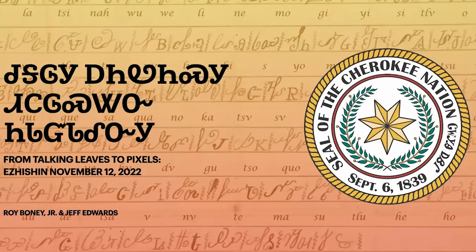We'll go ahead and get started. My name is Roy Boney Jr., and I'm with the Cherokee Nation Language Program. My co-presenter, Jeff Edwards, is also with the department. We're going to throw a bit of history at you today. You've probably seen some of the presentation yesterday about Cherokee syllabary from Mike, Monique, and Chris. Today we're going to talk more about that in-depth history and how we got to where we are, and the importance of typography for Cherokee language and where we need to go from here.